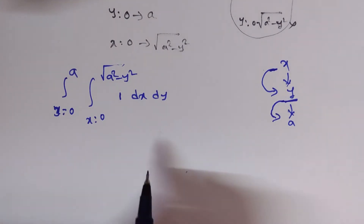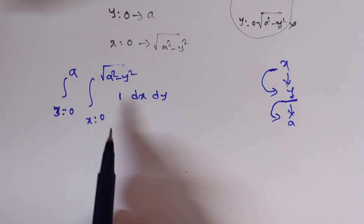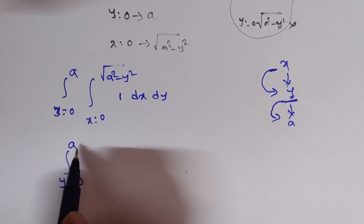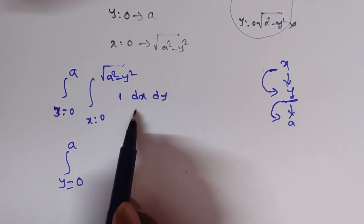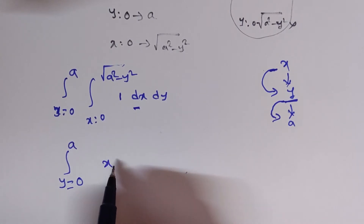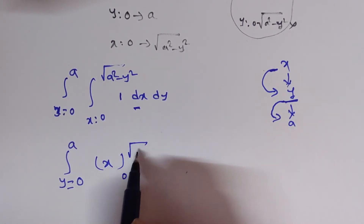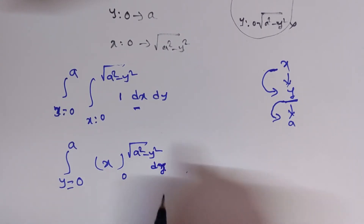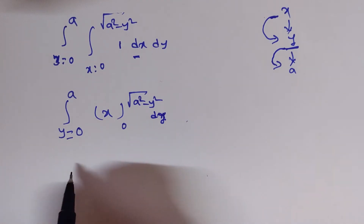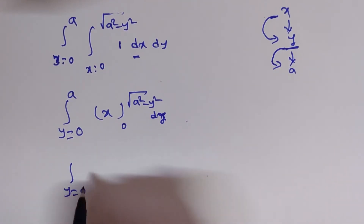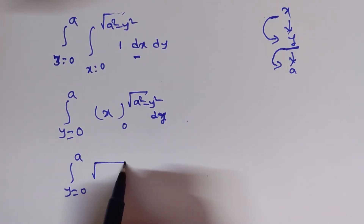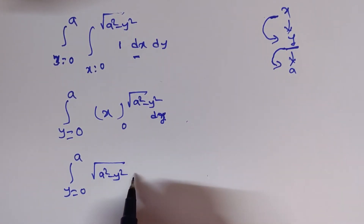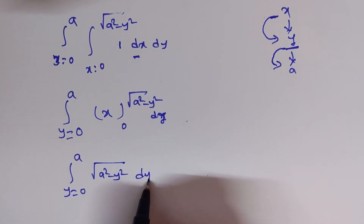Now integrating with respect to x: the integral of 1 dx is x. Keep the y-limits as they are. Applying the x-limits from 0 to √(a² − y²), the result is: ∫₀ᵃ [√(a² − y²) − 0] dy, which simplifies to ∫₀ᵃ √(a² − y²) dy.